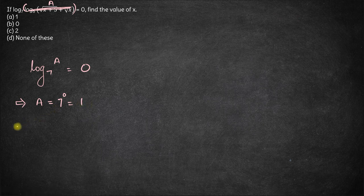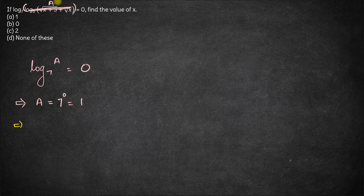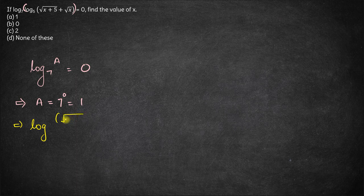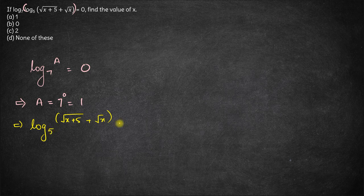Now let's see what was a. This whole expression is a. So a is nothing but log of square root of x plus 5 plus square root of x base 5 is equal to 5.